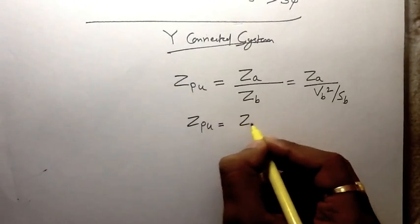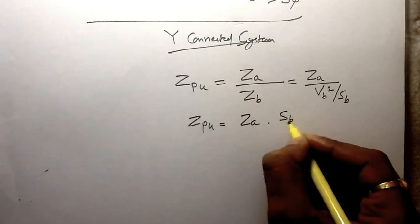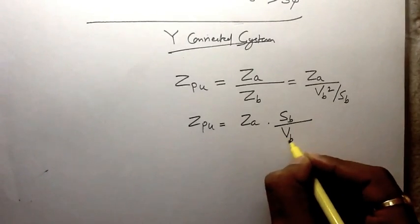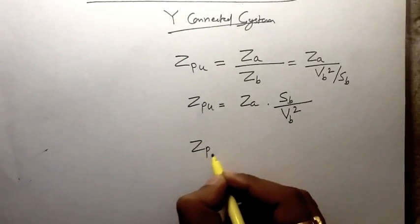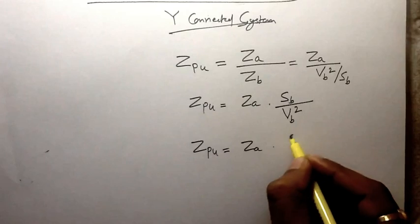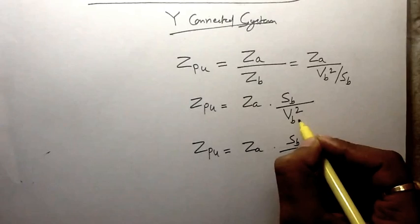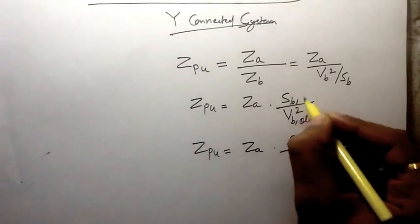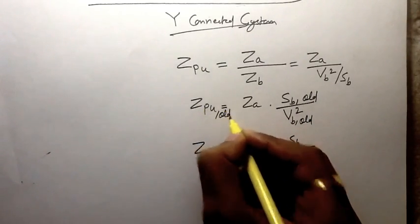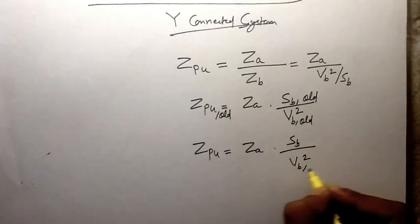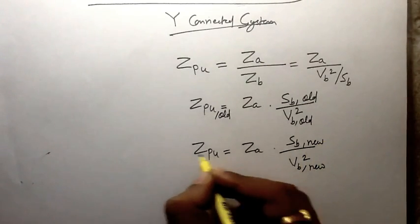Rewriting this equation, the per-unit impedance equals Z_actual times S_base divided by V_base squared. If this base voltage is the old base voltage and this base power is the old base power, then the per-unit value of the impedance is the old per-unit impedance. If we take the new base voltage and new base power, the value of the per-unit impedance will be the new per-unit impedance.